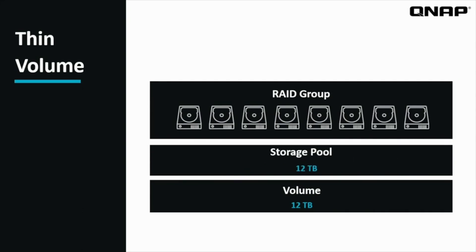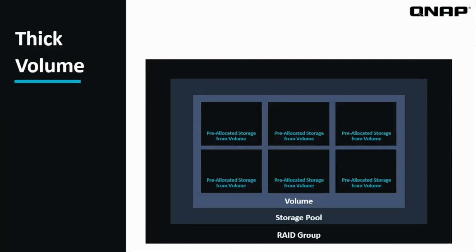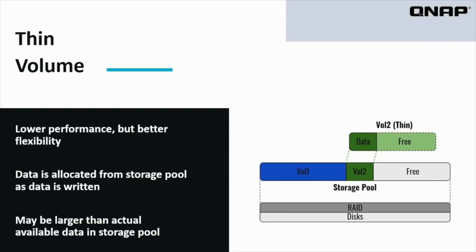Thick volumes have better performance than thin volumes, but are less flexible. When you create a thick volume, you are pre-allocating blocks of data to be written on from the storage pool. Once the volume has been created, you've taken a chunk of data the size of that volume from the storage pool and allocated it for that specific volume. That data can't be used for another volume because the storage is allocated from the start. Once the volume is created, the data can be written faster than on a thin volume.